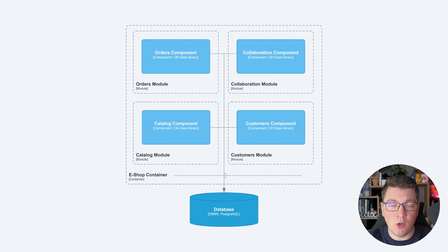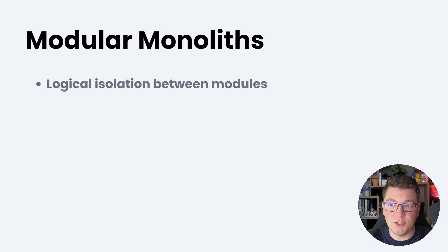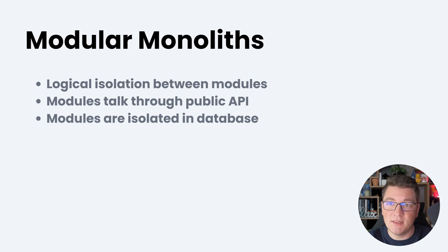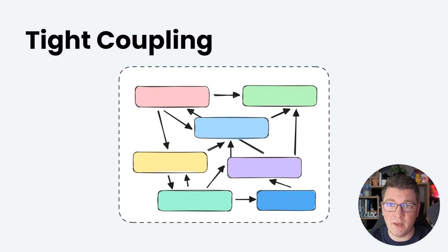So how do we actually build a modular monolith in .NET? What we want to achieve in practice is the logical isolation between our modules in the larger monolith system. We are going to enforce this logical isolation by making the modules only talk to each other using a public API. The second rule is that the modules are also isolated at the database level. If you think about it, what these two rules are trying to enforce is to prevent tight coupling inside of a monolith system.